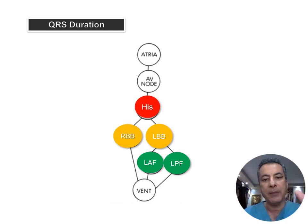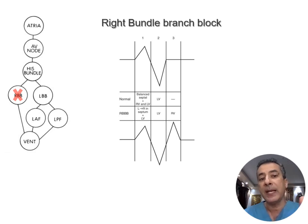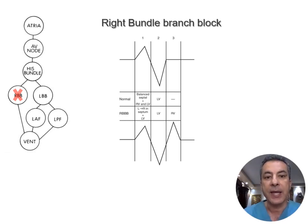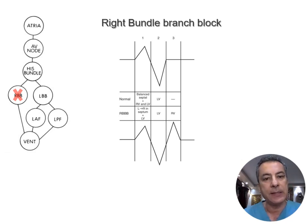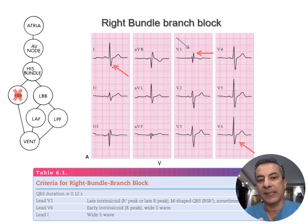Now we will identify right bundle branch block and left bundle branch block in ECG. In right bundle branch block, electrical stimulation initiates normally across the interventricular septum and left ventricle, so the initial 80 milliseconds resembles a regular QRS complex. However, activation of the right ventricle is delayed, taking a left-to-right direction. This delay manifests as a wide, delayed R wave in lead V1 and a wide S wave in V6 and lead I, with the QRS duration increasing to 120 milliseconds and beyond.